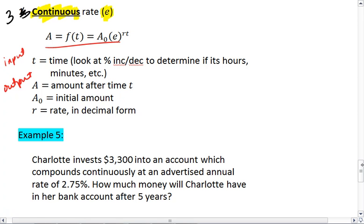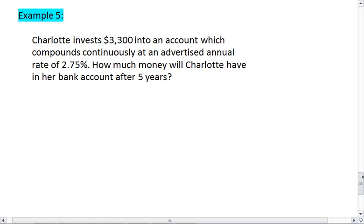Let's look at an example. Example 5: Charlotte invests $3,300 into an account which compounds continuously. Right away we have A equals A₀ e to the rt. An advertised annual rate of 2.75%. I'm going to write r equals positive 0.0275, and we know A₀ is going to be the 3,300.